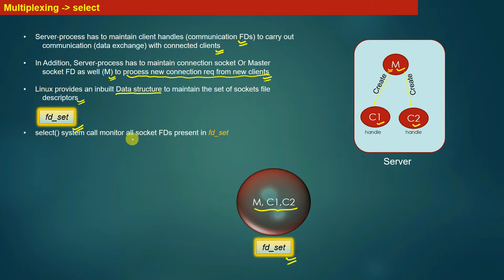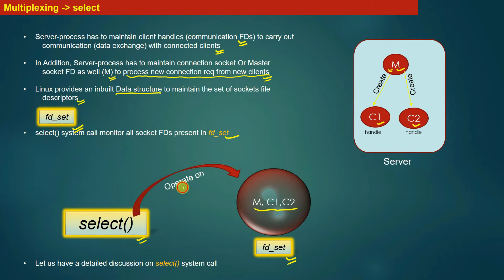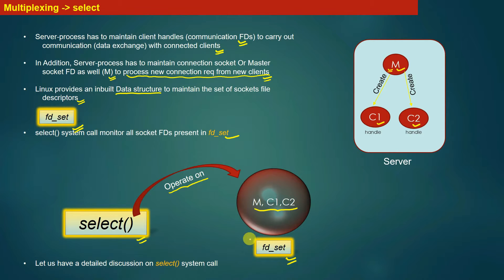The select system call monitors all socket file descriptors present in the fd_set data structure. The select system call operates on fd_set — in other words, it operates on the set of file descriptors maintained by the server. The argument to the select system call is the fd_set data structure containing the set of file descriptors. This is a high-level overview of how select works and its relationship with fd_set. Once you understand the mechanism, implementing a server with multiplexing capabilities becomes straightforward.